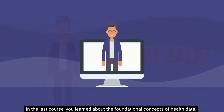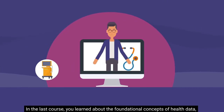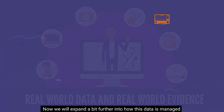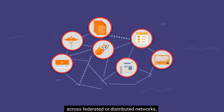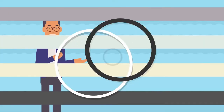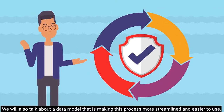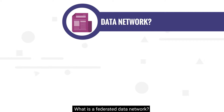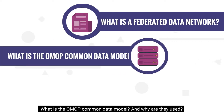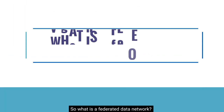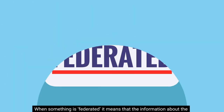Hello there, welcome back. In the last course you learned about the foundational concepts of health data, including what are real world data and real world evidence. Now we will expand further into how this data is managed across federated or distributed networks and the benefits of doing this on a large scale. We will also talk about a data model that is making this process more streamlined and easier to use. The things you will learn in this course include: what is a federated data network, what is the OMOP common data model, and why are they used. Let's get started.